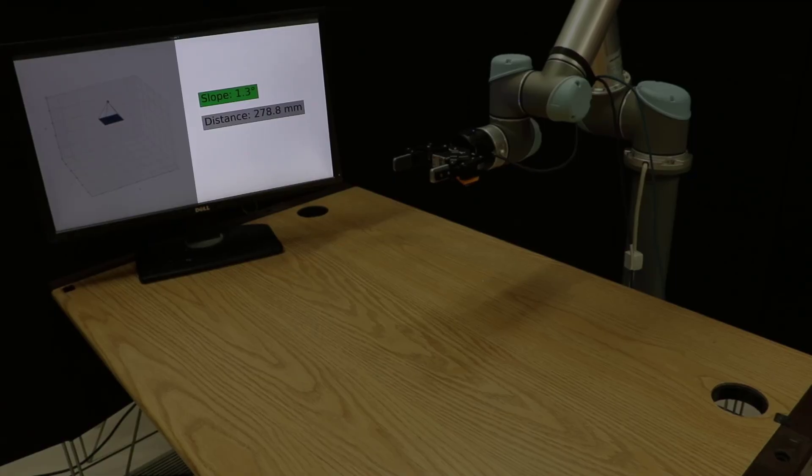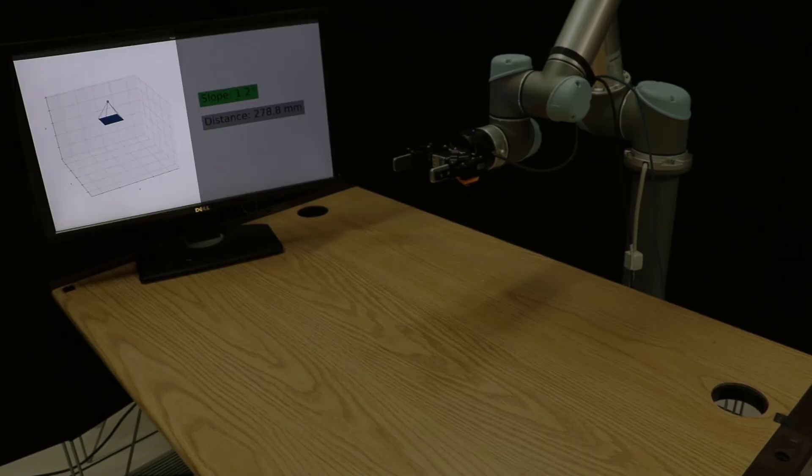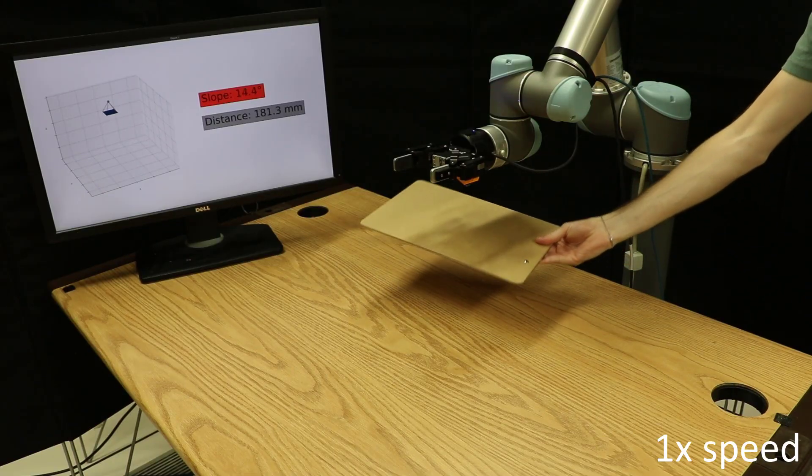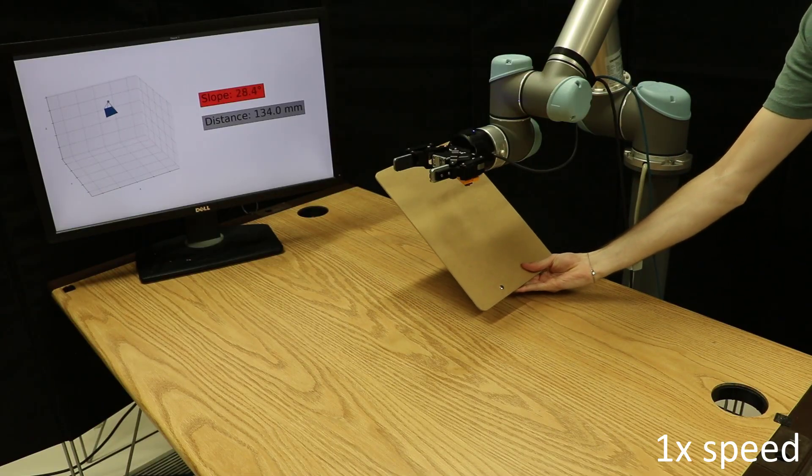If the measured slope is below 5 degrees, it is shown highlighted in green, otherwise it is highlighted in red. On the left is a 3D visualization of the planar surface in the reference frame of the sensor. As the slope and distance to the surface under the robot change, that change is reflected in the visualization.